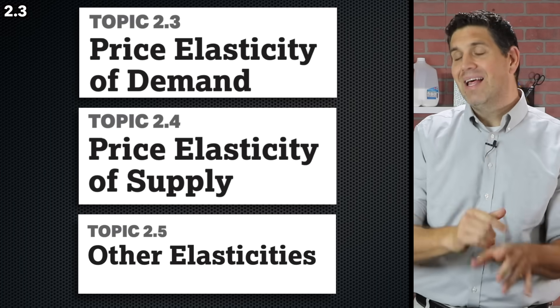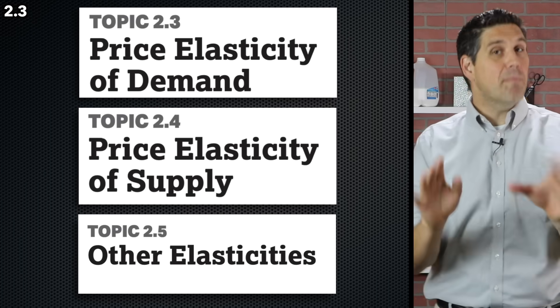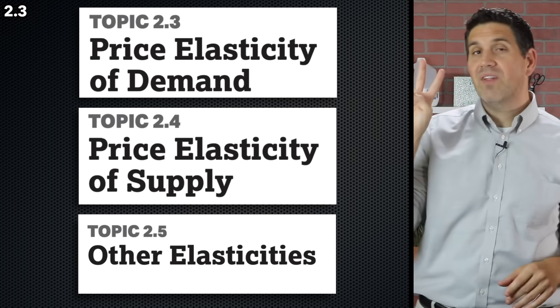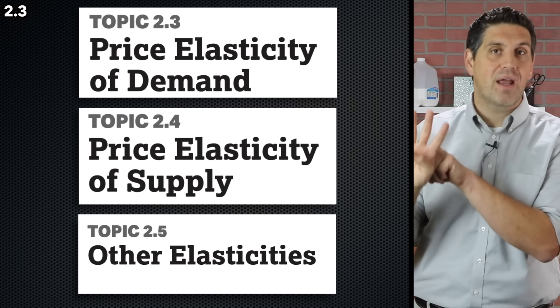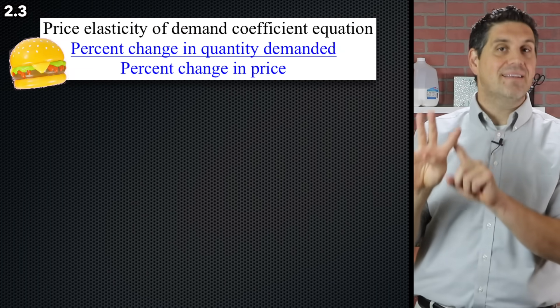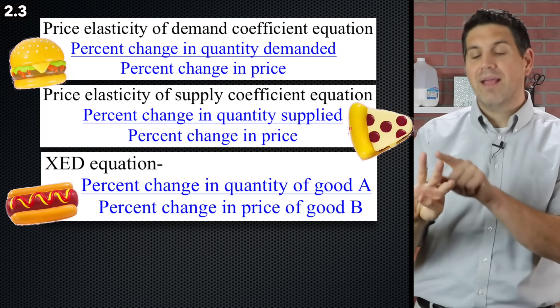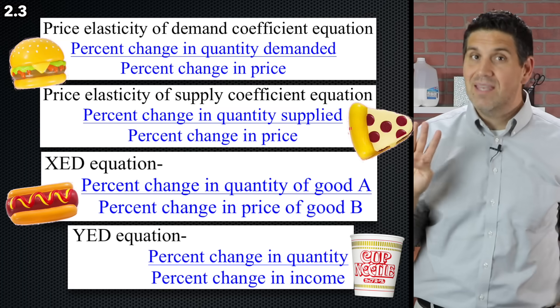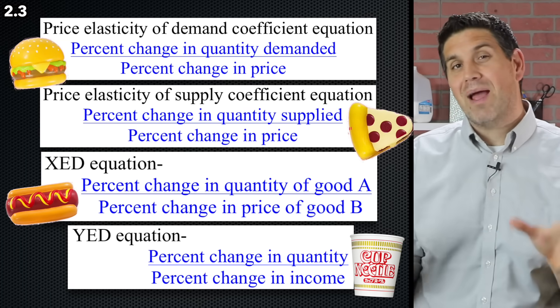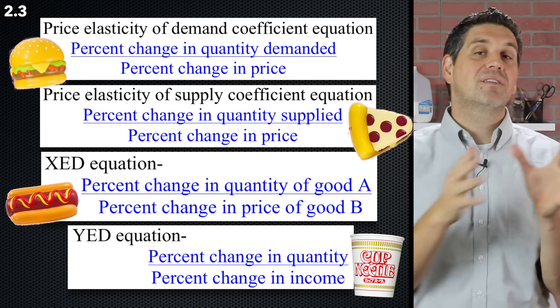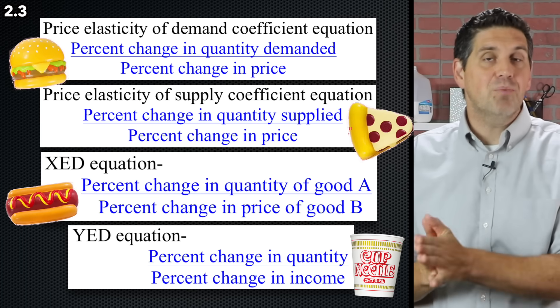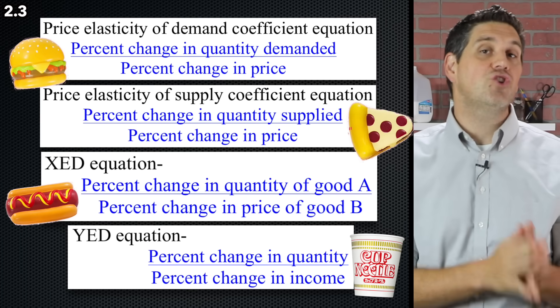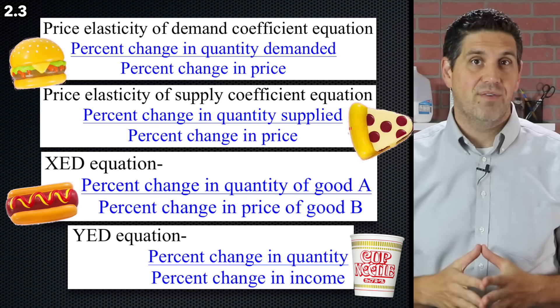Before we put supply and demand together, let's jump into elasticity. There are four types of elasticity and four different equations you need to know: elasticity of demand, elasticity of supply, cross price elasticity, and income elasticity. They all show the same idea — how sensitive quantity is to a change in price — and they show you the shape of a demand or supply curve.